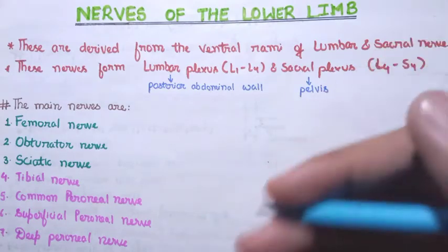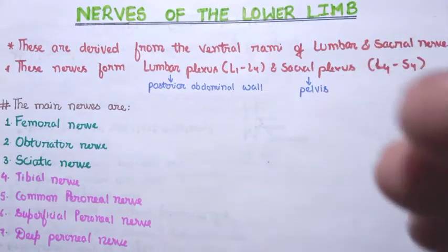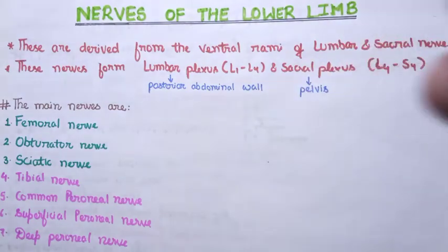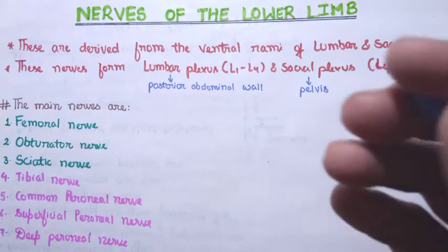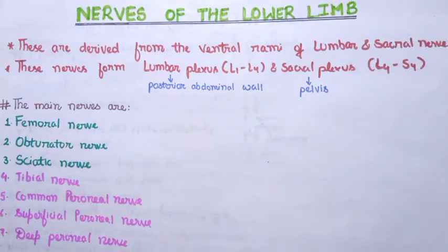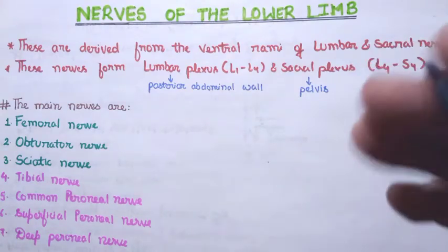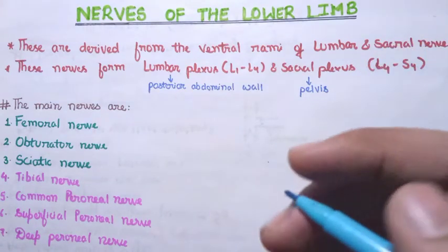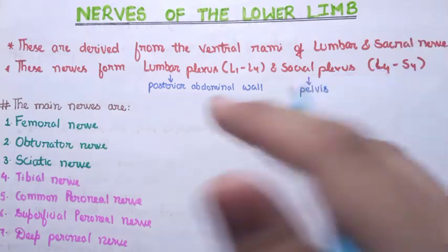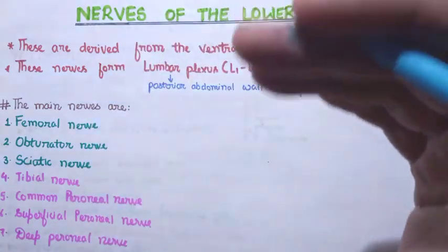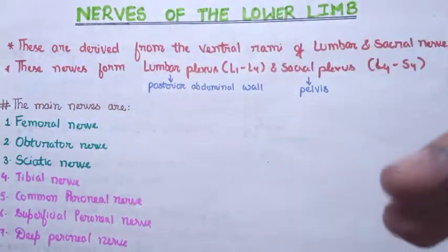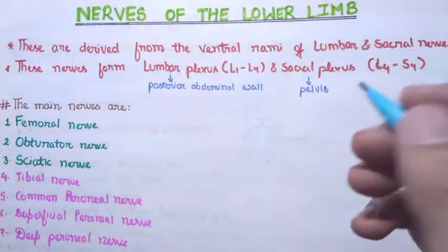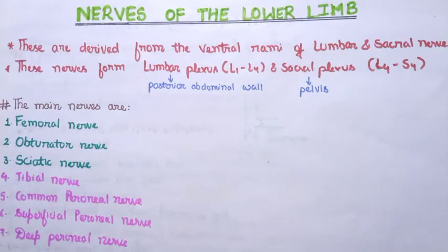The posterior abdominal wall is formed by different muscles as well as the inferior vena cava and some of the organs that we'll see in the abdominal section. The sacral plexus lies in the pelvic part, just below the abdomen, in the perineum region.